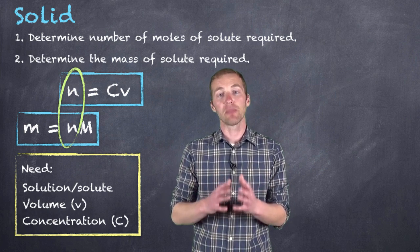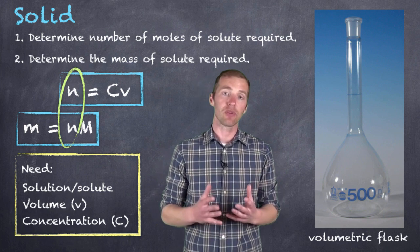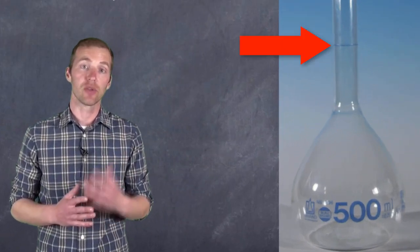So what we use is a specialized piece of equipment called a volumetric flask. And this volumetric flask has only one graduation. So in the example that you see here, the one graduation is 500 milliliters. So this volumetric flask would be used whenever an individual is trying to prepare half a liter of a standard solution.